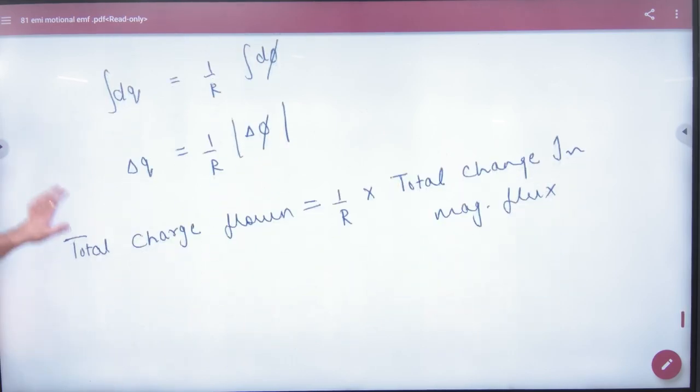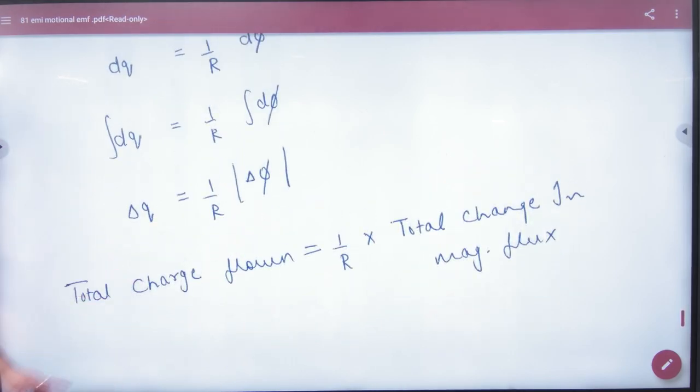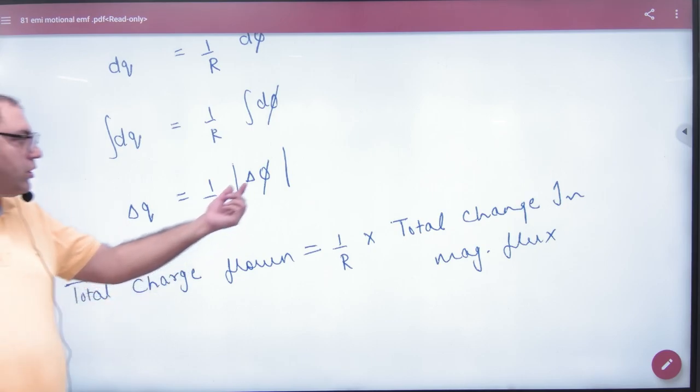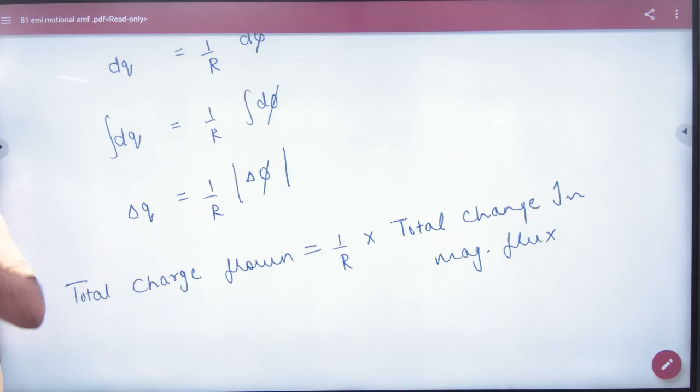So please note in this formula booklet, that total charge, how much flow is? When total change in flux dφ is, whatever change in flux is, it will be divided by resistance from R. What will be total charge value? Total charge formula: 1 by R into total change in magnetic flux.